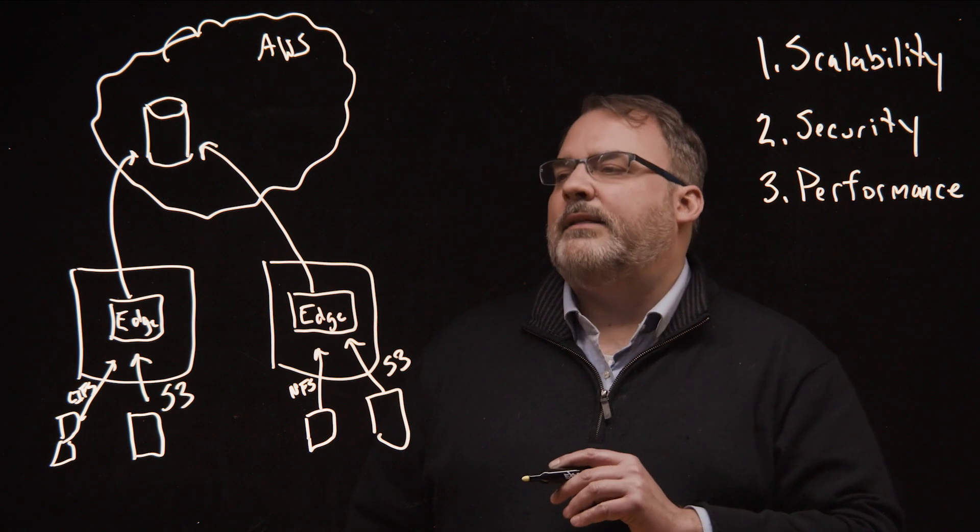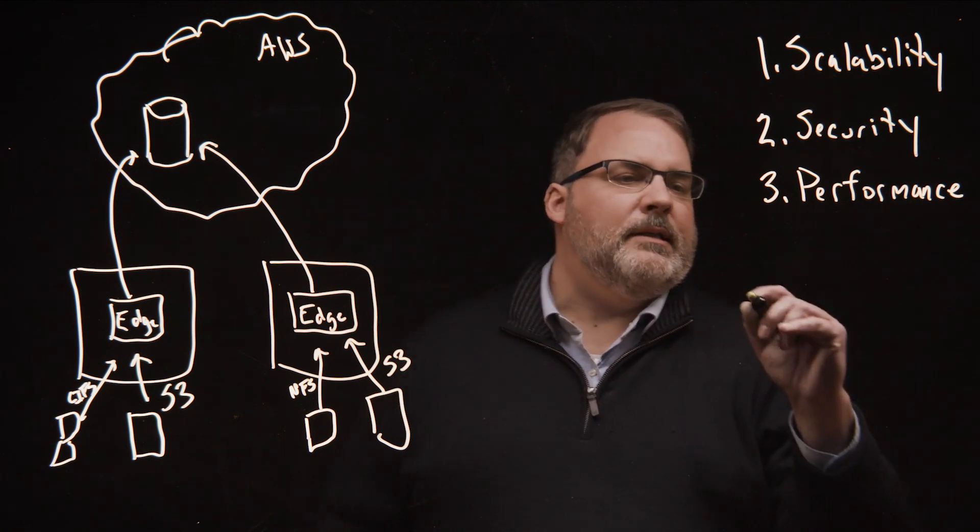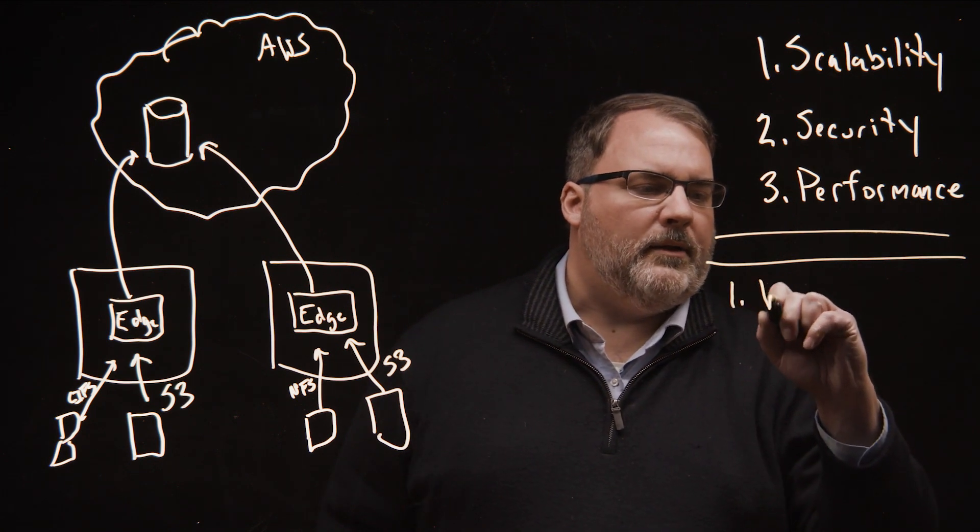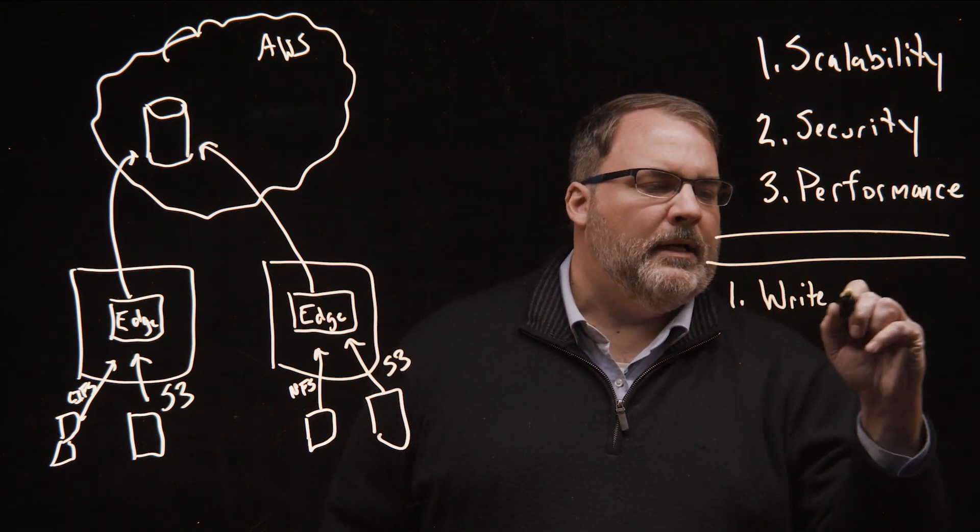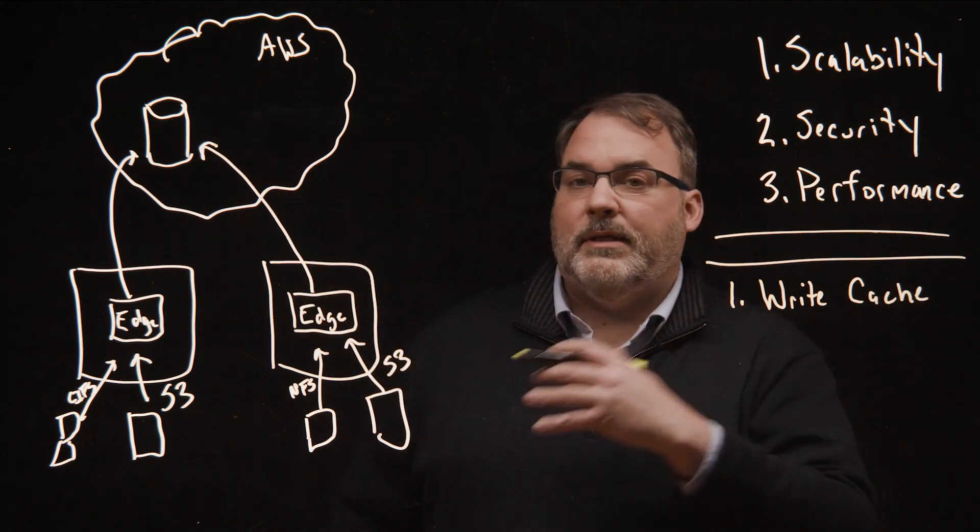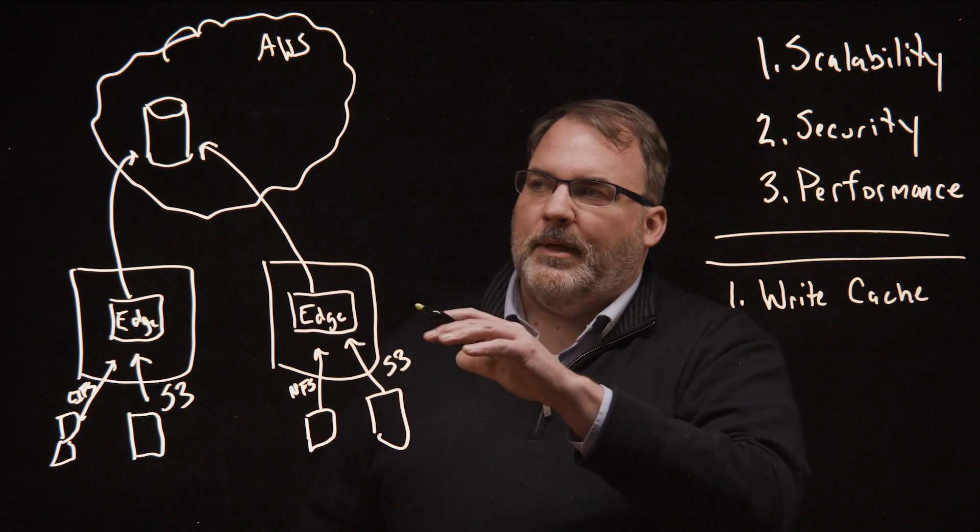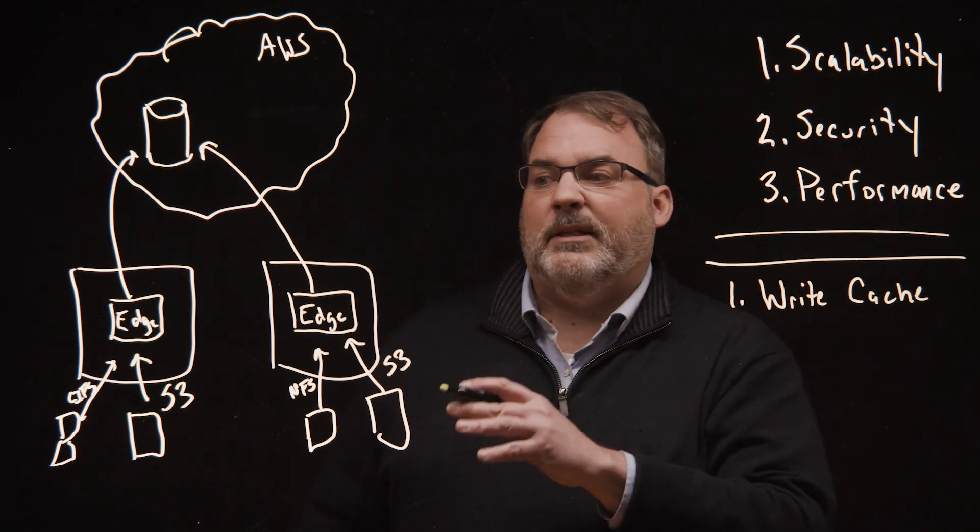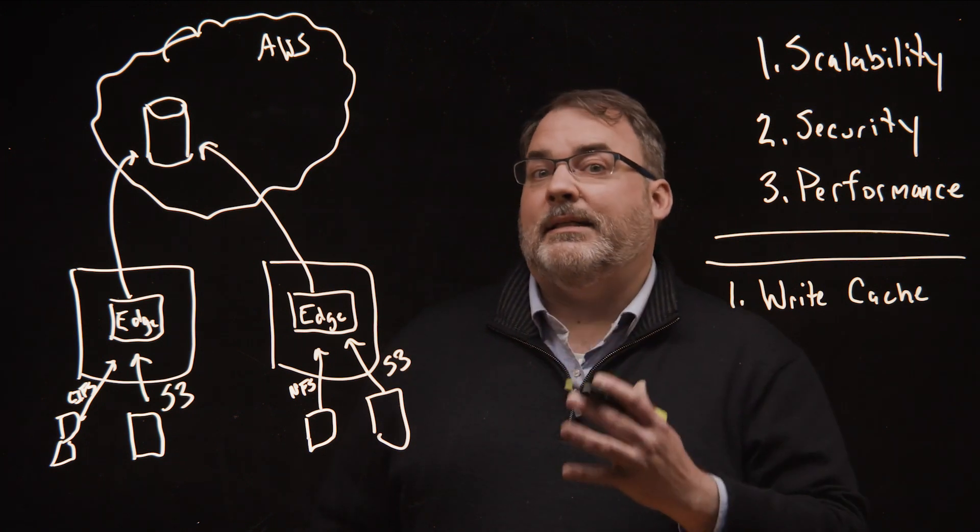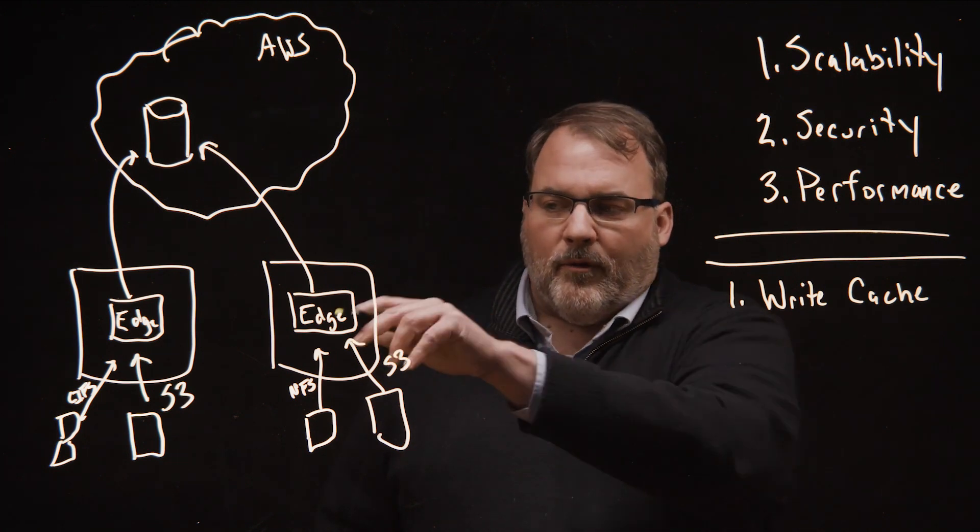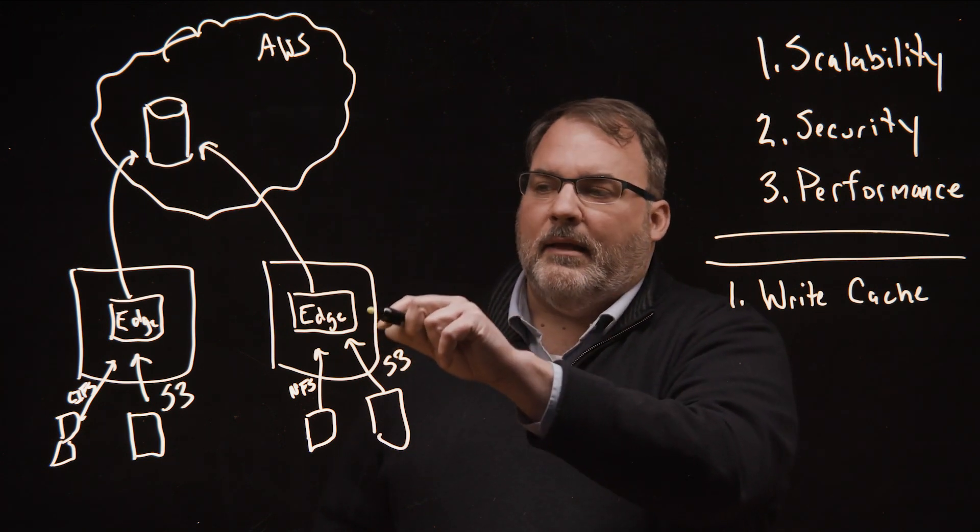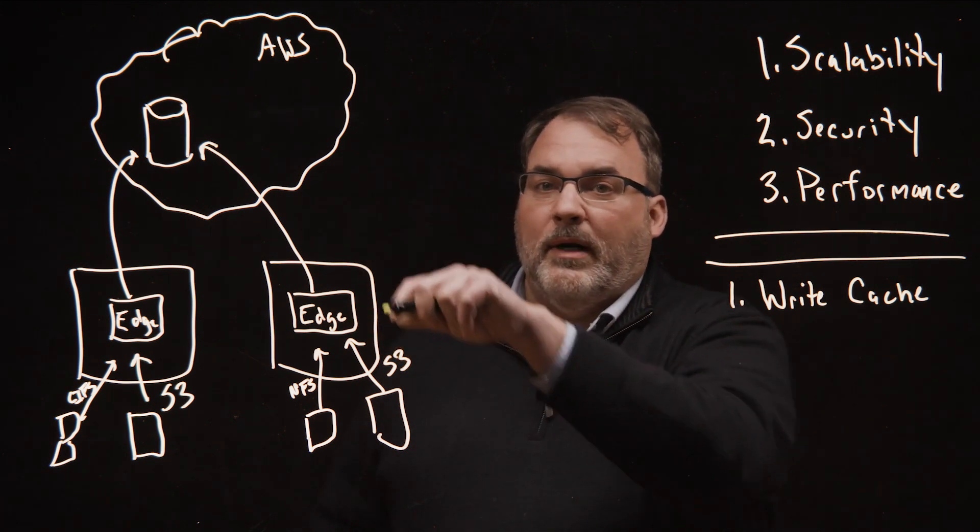So where do we see this with our customers? The first use case is a write cache. Customers who need to ingest a lot of data want to move it into S3 because they're using the S3 protocol. But the problem is, maybe it's a remote office or a manufacturing location, and when I write into the cloud, I have to deal with network inconsistencies. With a write cache, the S3 edge, I can write to my edge and then push it to the cloud whenever the network is available.